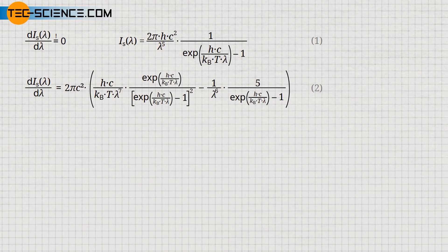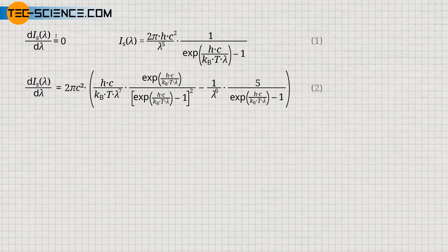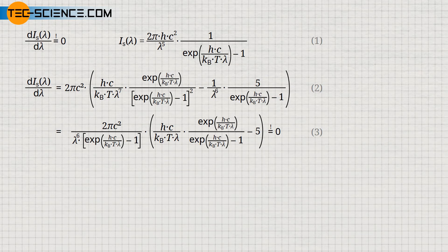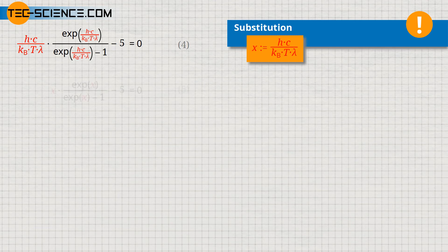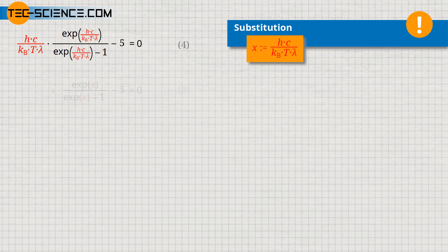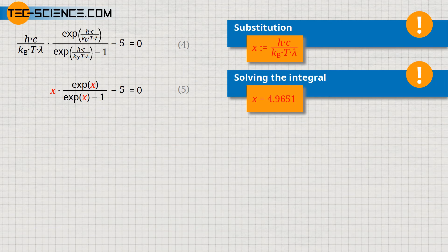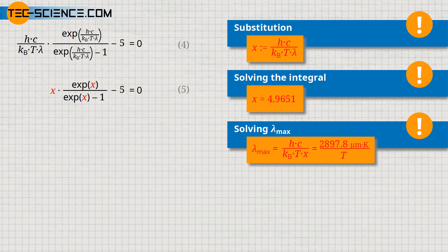You are welcome to pause the video and follow the individual steps yourself. At this point we can factor out the exponential term. This equation will only be zero if the term marked in red becomes zero. To solve this equation we first define a new variable x. The equation obtained with the help of this substitution can only be solved numerically, for example with Newton's method. The solution gives x equals 4.9651. With this solution, the wavelength lambda_max can be determined by solving the definition of variable x for the wavelength. This eventually leads to Wien's displacement law.